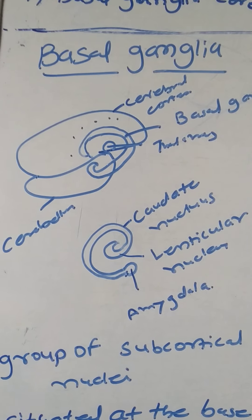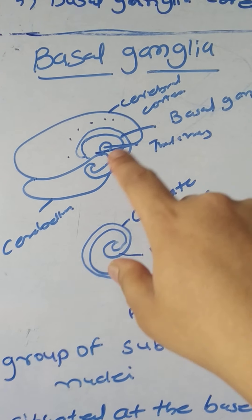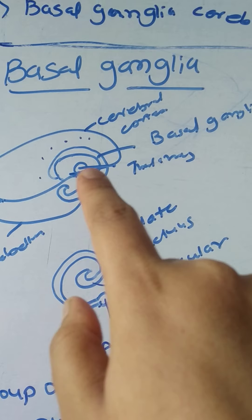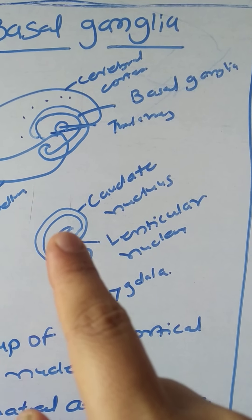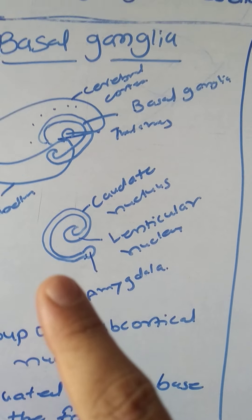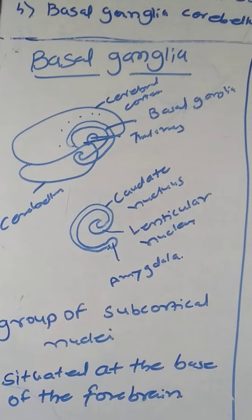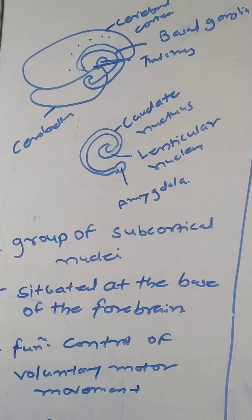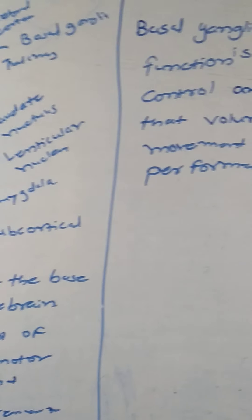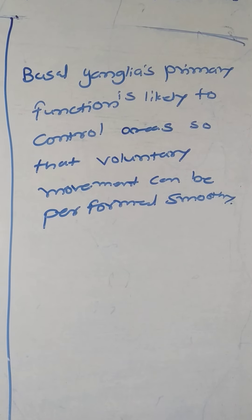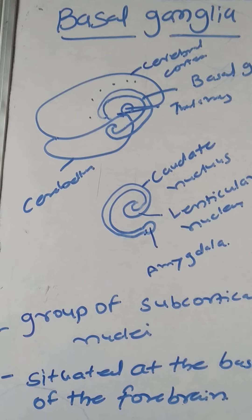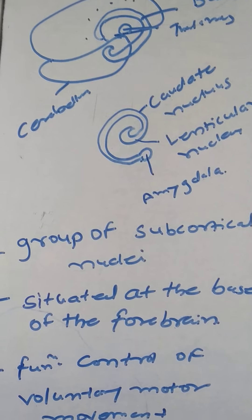Now we will learn about the basal ganglia. In the diagram we can see the basal ganglia alongside the cerebral cortex and thalamus. The basal ganglia contain the caudate nucleus, lenticular nucleus, and amygdala. Basal ganglia means a collection of nuclei — a group of subcortical nuclei situated at the base of the forebrain — and their function is to control voluntary motor movement and eye movement.